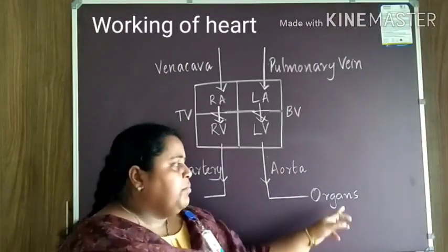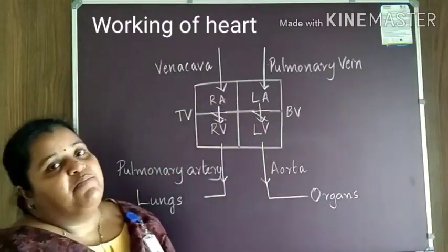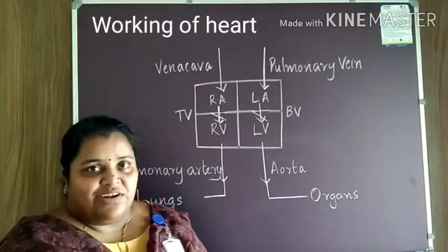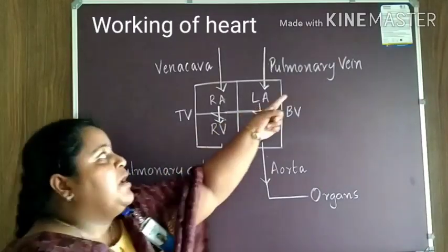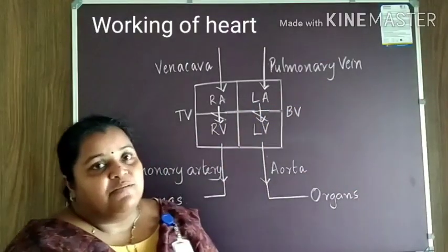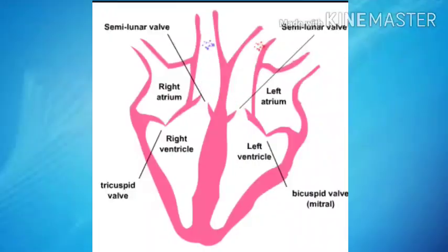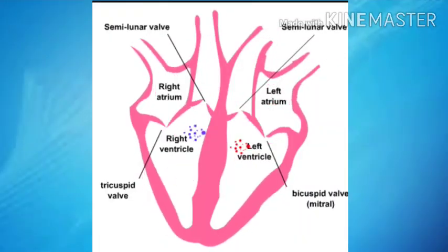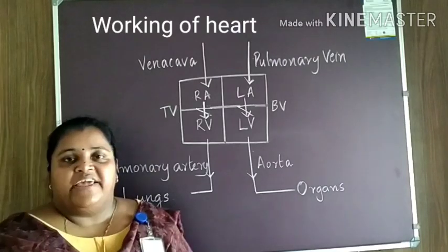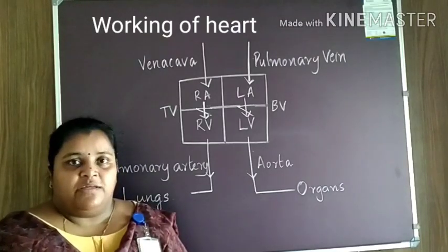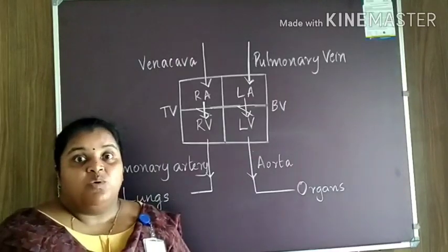From the organs, the vena cava carries the blood back to the right atrium. From the lungs, the pulmonary vein carries the blood to the left atrium. This cycle takes place continuously, and this is how the heart works.